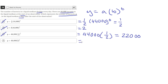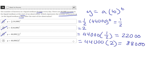If we plug in T equals one into option D, we get 44,000 times two, which equals 88,000. That's correct because the number of bacteria after one day should have doubled to 88,000. So when T equals one, D is true, which means D is the only correct answer — so D is the correct answer.